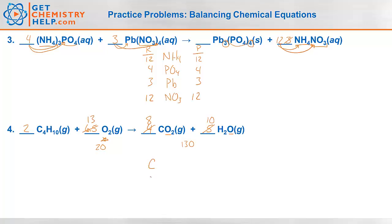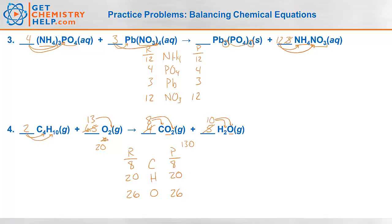Let's verify. Carbon, hydrogen, and oxygen: two times four is eight carbons on the reactants, eight on the products. Hydrogens: two times ten is twenty on the reactants; ten times two is twenty on the products. Oxygens: thirteen times two is twenty-six on the reactants; eight times two is sixteen, plus ten more is twenty-six. We balanced number four.